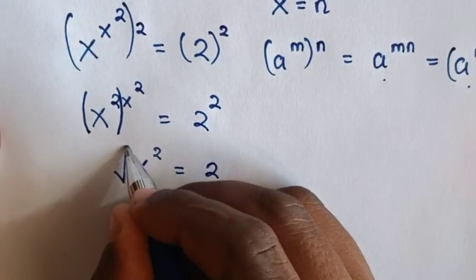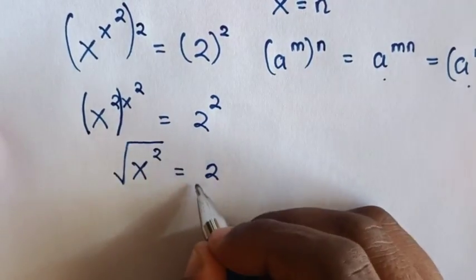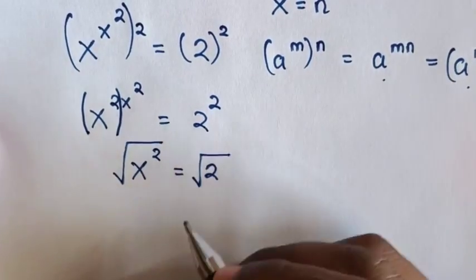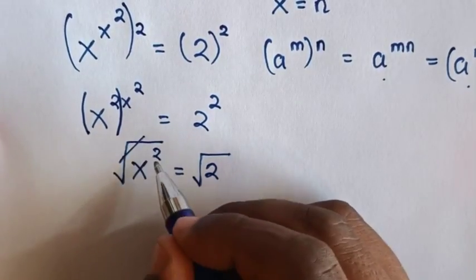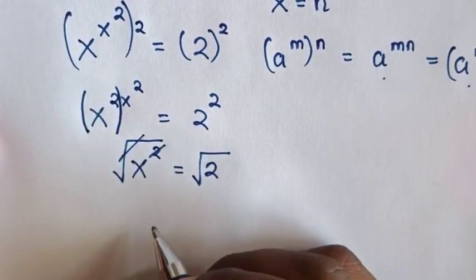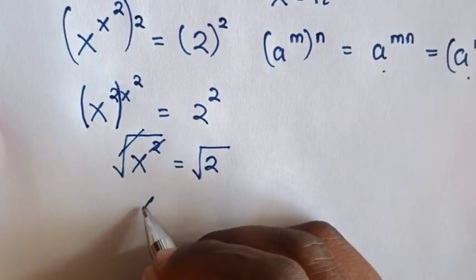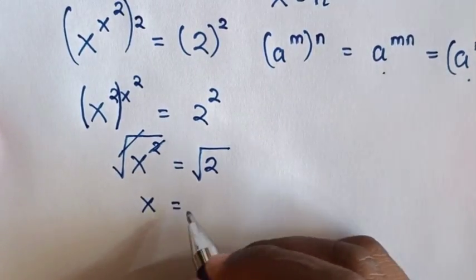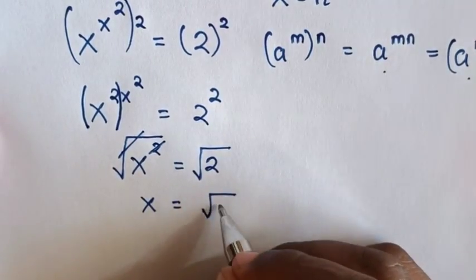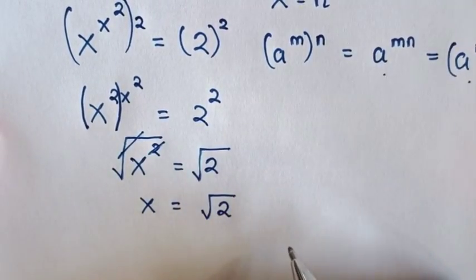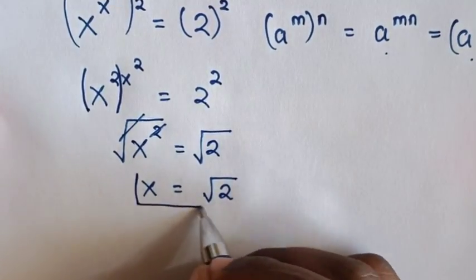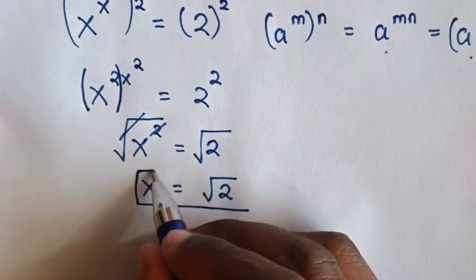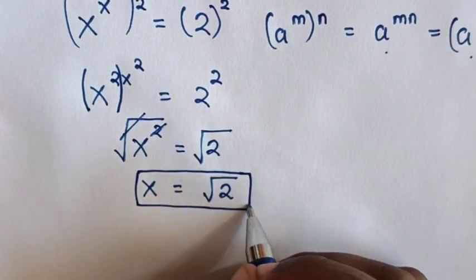In the next step, we will apply square root on both sides. So this square root will cancel with the square. Then x is equal to square root of 2. So this is the final answer for the value of x.